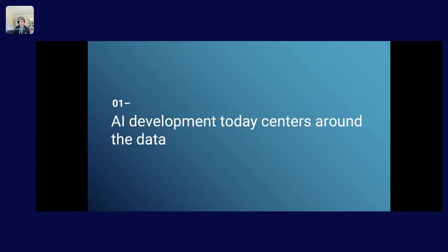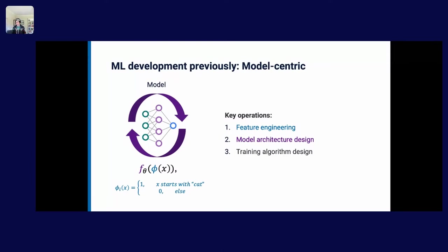The first principle of data-centric AI is that AI development today often centers around the data — meaning it centers around iterating on and effectively programming the data as a way to build and modify AI applications or ML models. In model-centric development, key operations often had to do with defining or sub-selecting and reducing the complexity of model architectures. Typically this revolved around what's called feature engineering — picking out the actual features fed as basic inputs to the model.